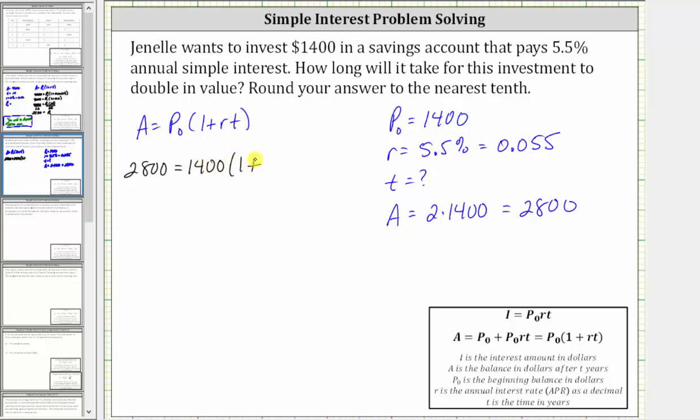Then we have one plus R times T, where R is 0.055 and T is unknown, giving us plus 0.055 T.